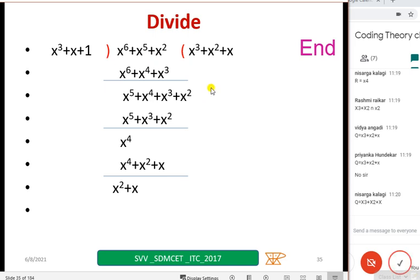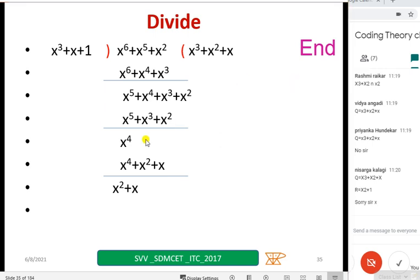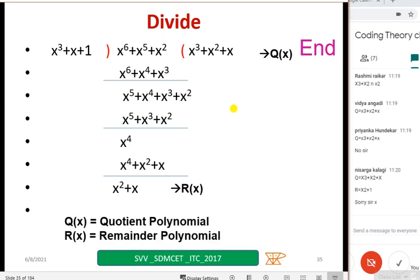So all of you have become expert in addition, multiplication, division now. So then this chapter will become easy for you people to understand. So now it is okay. Then x square plus x only, it is correct, not 1. This is r of x. This is q of x. Q of x is nothing but a quotient polynomial. R of x is a remainder polynomial.